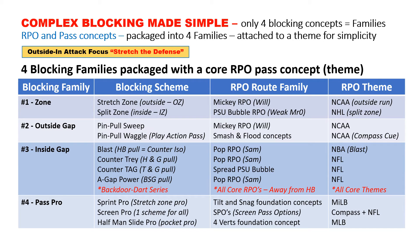Number two is outside gap — it's classic pin-and-pull sweep along with the waggles. Number three is our counter game: we run a counter blast, which is an old ISO, and then you can go into a counter tray and a counter tag, which is a tackle and a guard pulling. Then we finish up with classic A-gap power. Additionally, we use what's called a backdoor dart series, where you use all the RPOs but it's simply a way to attack away from the H-back using counter or dart action by the back. Number four is your pass pro — we keep that simple with sprint, screen, and our half-man slide pocket pro.